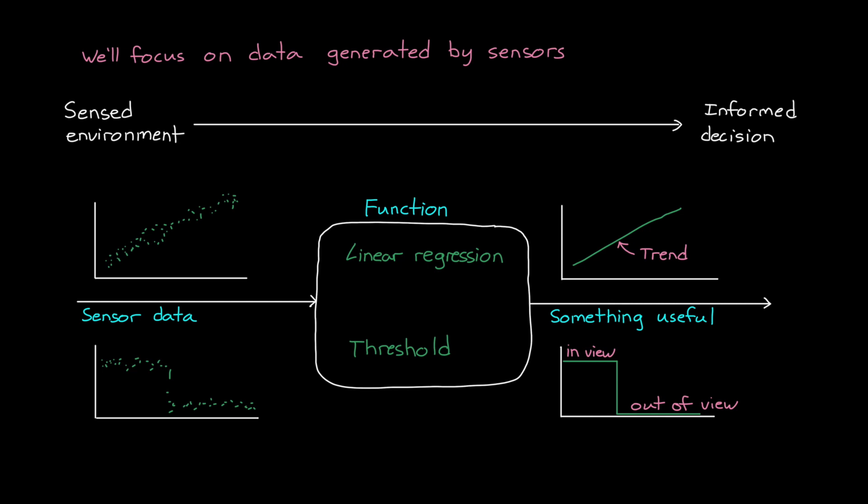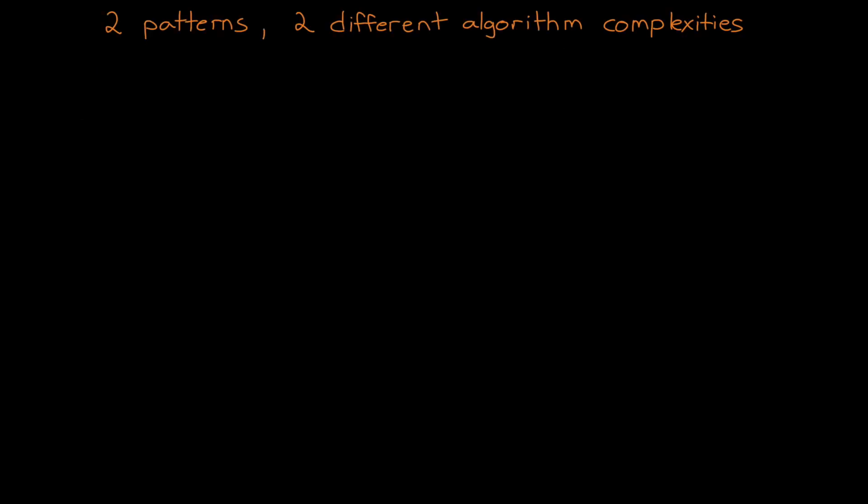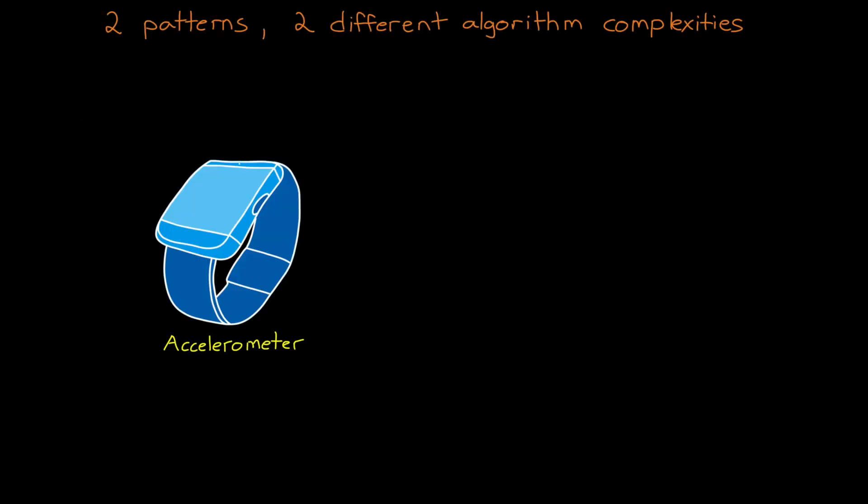But here's the thing I want to point out. The complexity of this algorithm, and how difficult it is to develop, scales with the complexity of the patterns that you're trying to find and label, as well as how those patterns vary from one observation to another. Let me give you a rather silly example to show this. Let's say we're designing a watch that has an accelerometer as one of its sensors, and all we want to know is how fast is the watch accelerating.